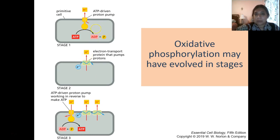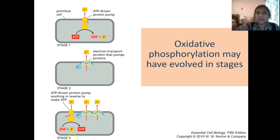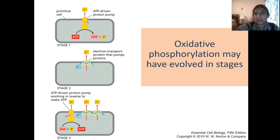Over time, cells developed electron transport proteins that pumped protons out instead of consuming ATP for that purpose, so ATP was no longer wasted and could be used for the cell's own energy needs. Finally, over a longer period and with rising atmospheric oxygen levels, a more sophisticated system developed where electrons drove the proton pumps, and those pumps also brought protons back in when the gradient allowed, generating ATP — gaining energy rather than only losing it.